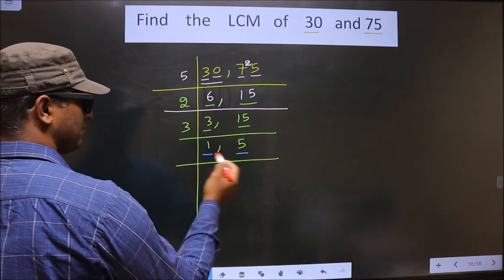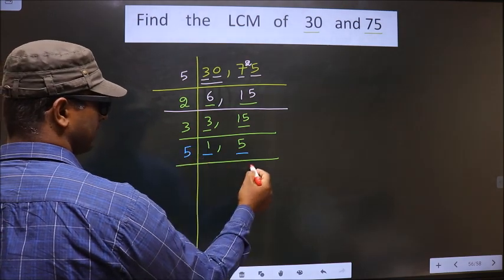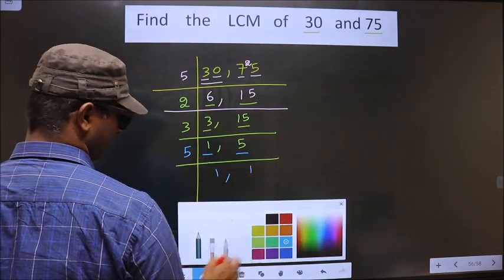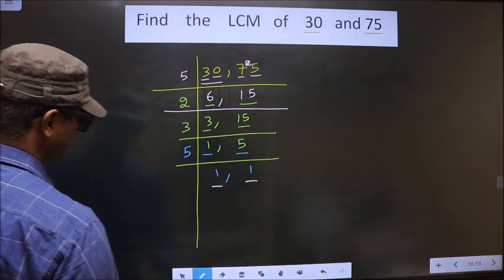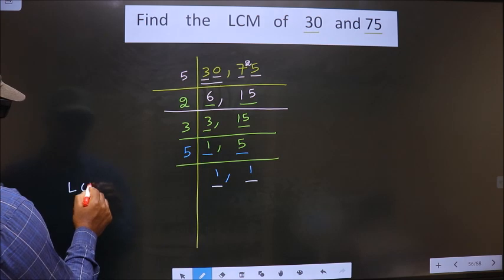5 is a prime number, so I take 5 times 1 is 5. So now we got 1 in both places. So now our LCM is...